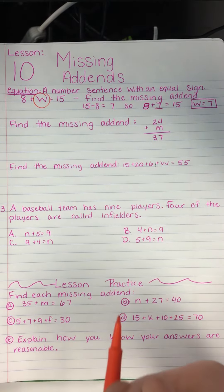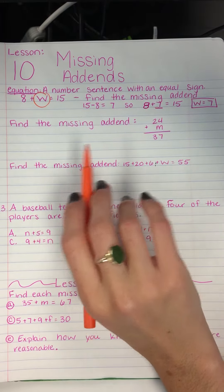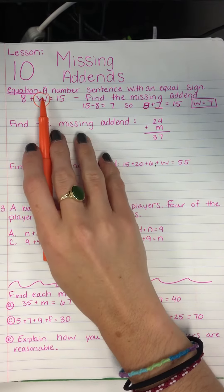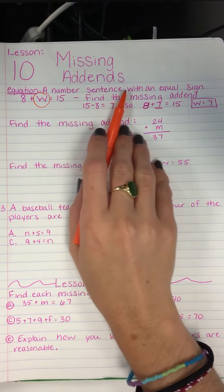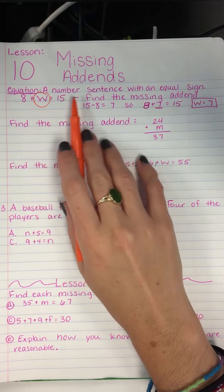If you remember from our other lesson, an addend is just simply a number in a sequence, or a number in an equation. An equation is a number sentence with an equal sign. So equation, a number sentence with an equal sign.